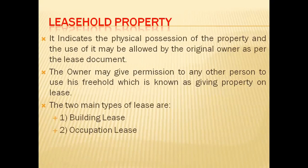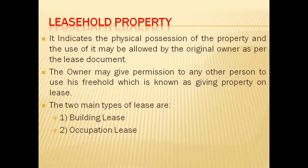The next topic is leasehold property. Whatever your property is, you will give it on a lease. For example, if you have a society property, the owner will give another person permission to use his property for a particular time. The owner will supply it in a particular time period. This is called a lease — giving property on lease. So, property on lease means the owner has given permission to any other person to use his property.